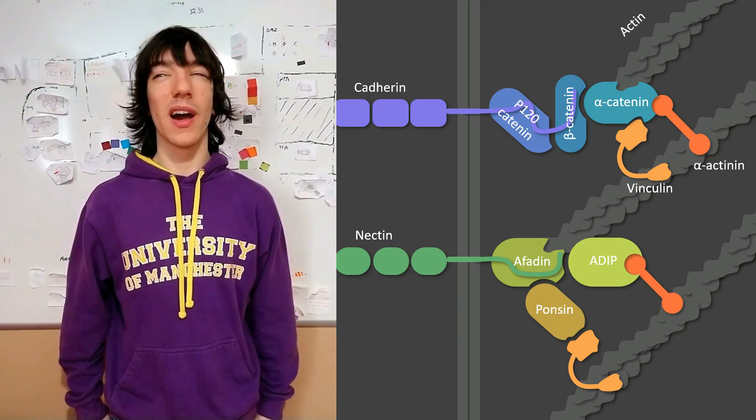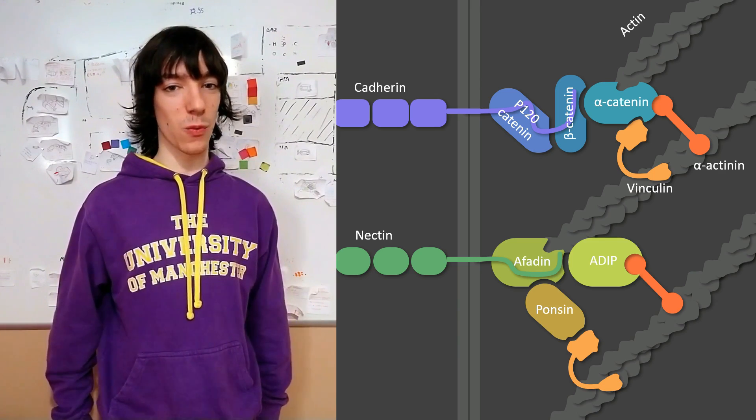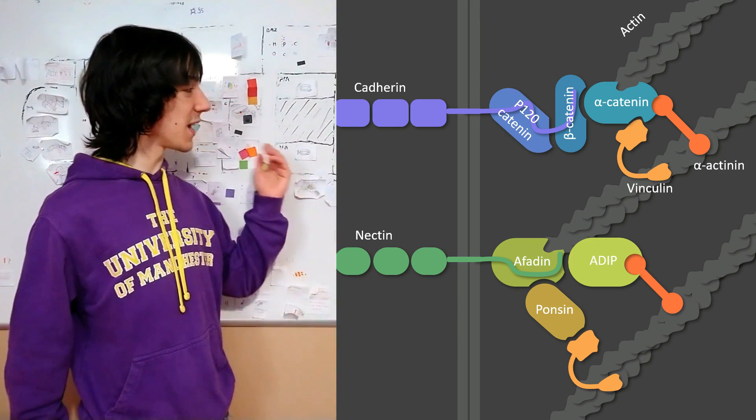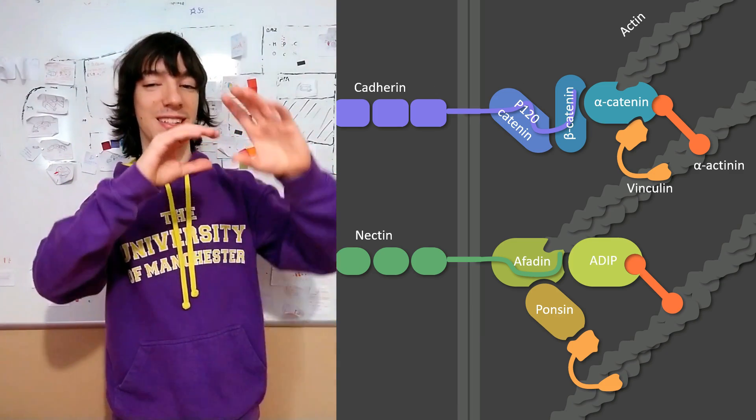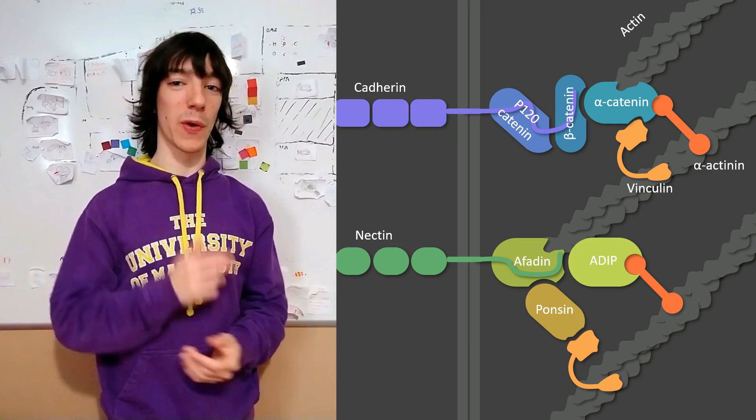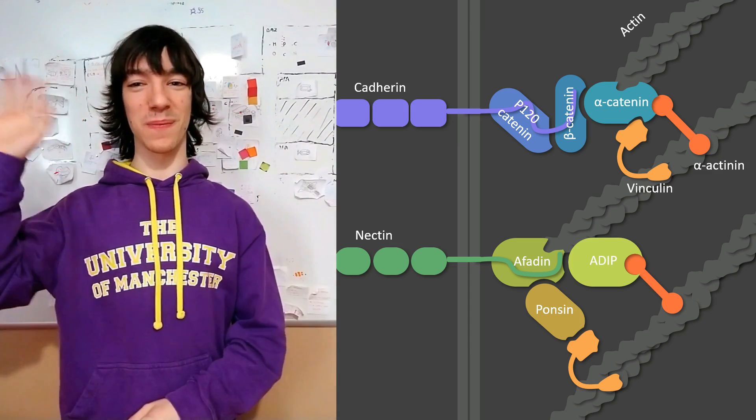And if you want to watch another video, I would recommend the adherens junction video, because it also connects cells through the microfilaments and it's the kind of junction that you find just below tight junctions in polarized cells. See you soon. Hasta pronto.